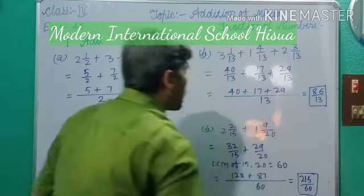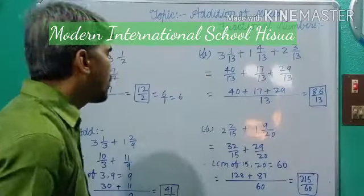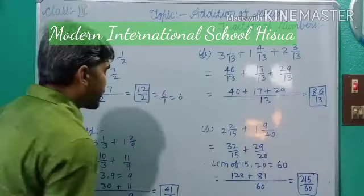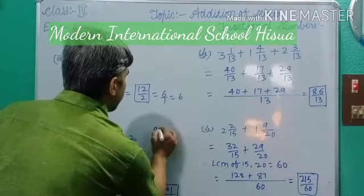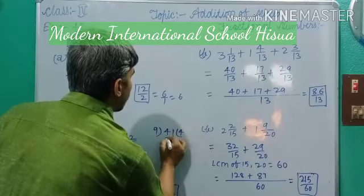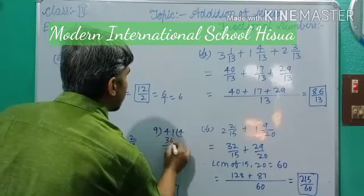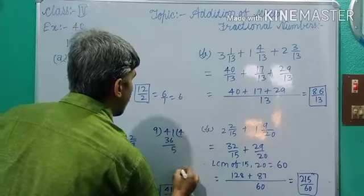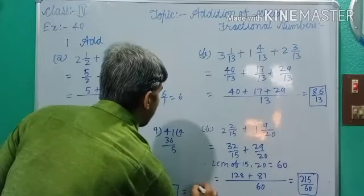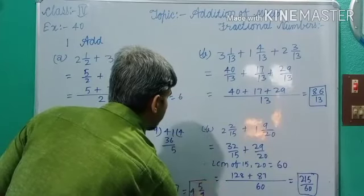If you want to convert into mixed fractions, you can do so. Because you know how to convert an improper fraction into a mixed fraction. For example, 41 by 9: 9 fours are 36, 9 fives are 45. So 9 fours are 36, and 41 minus 36 equals 5. Write down 4 and 5 by 9. This is the mixed fraction.